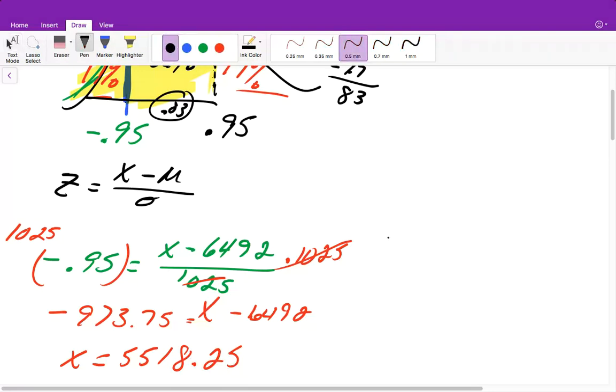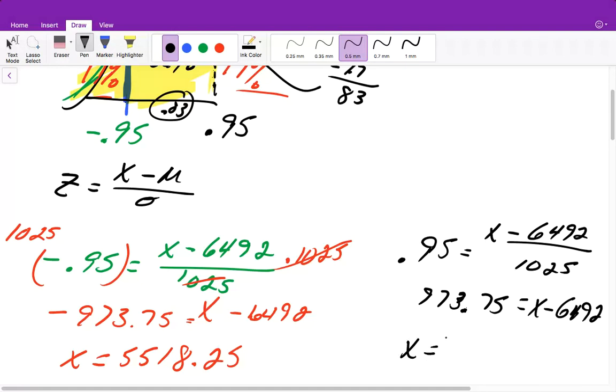Then we will have to do the same thing for when our Z-score is 0.95. So it's very similar. The only difference is here, this number is not going to be negative, it'll be positive. So it's the exact same steps that we did before, so then we will get 973.75 equals X minus 6,492. We will add 6,492 to 973.75, and we will get that X equals 7,465.75.